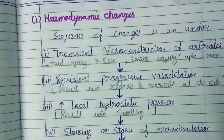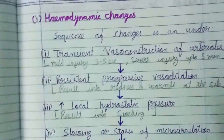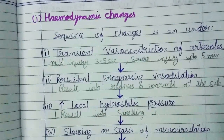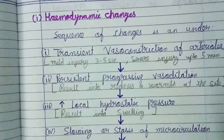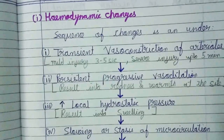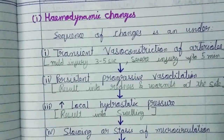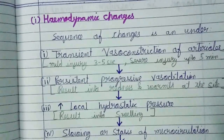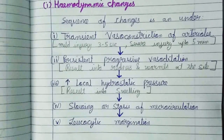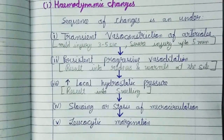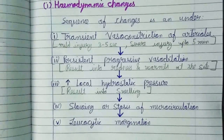Vasodilation results in more blood flowing to that site, causing redness and warmth. Then an increase in local hydrostatic pressure causes edema as tissue fluid accumulates, resulting in swelling. After this, slowing or stasis of the microcirculation occurs, followed by leukocytic margination where leukocytes come and begin the healing process.